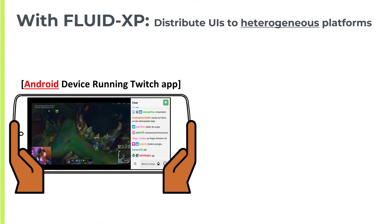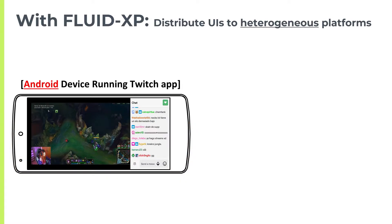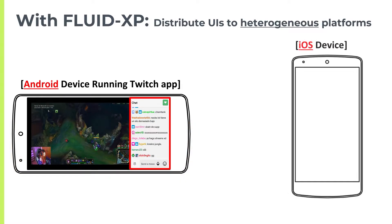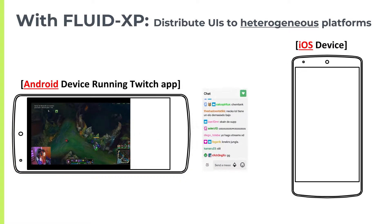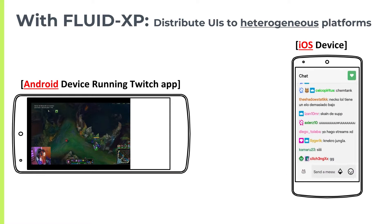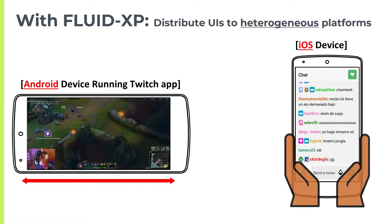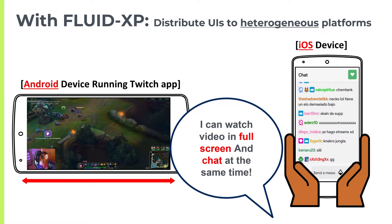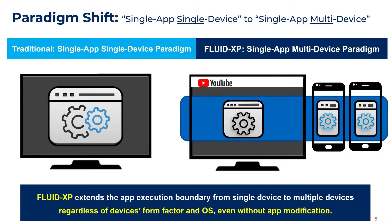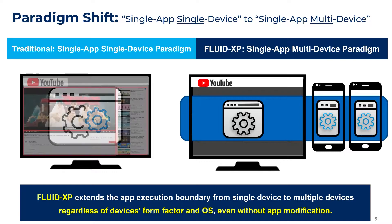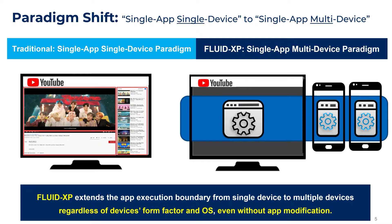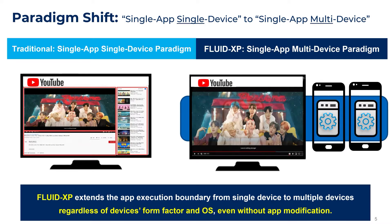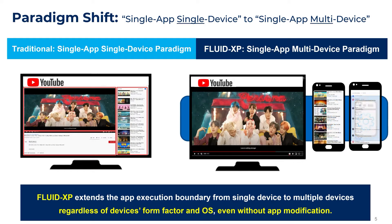We present Fluid XP, a mobile platform that enables users to distribute UI elements of unmodified off-the-shelf mobile apps to heterogeneous platform devices. Fluid XP envisions a single-app multi-device paradigm, where a mobile application executes across multiple devices.